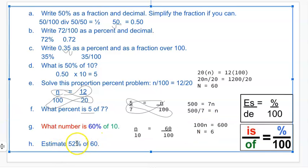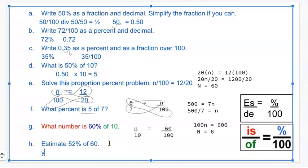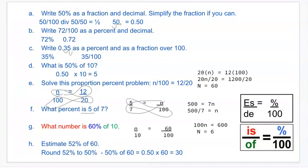Last one. Estimate 52% of 60. So when I say estimate the percent, we're going to round 52% to 50%. And then from there, you're just finding 50% of 60, and 50% is 0.5 times 60. That would be 30. And that is how you do those.